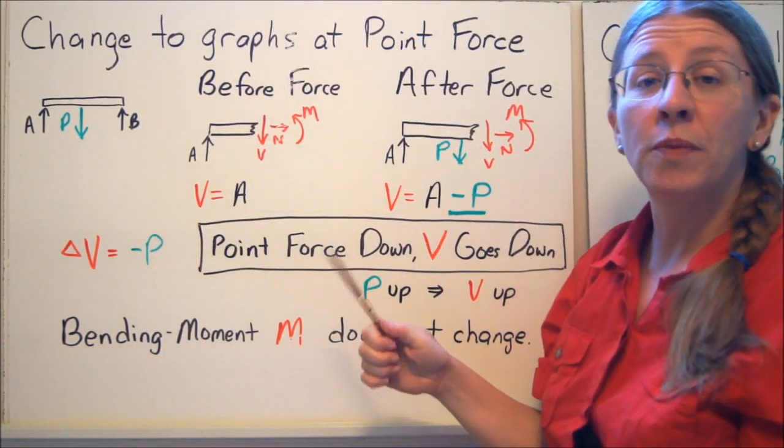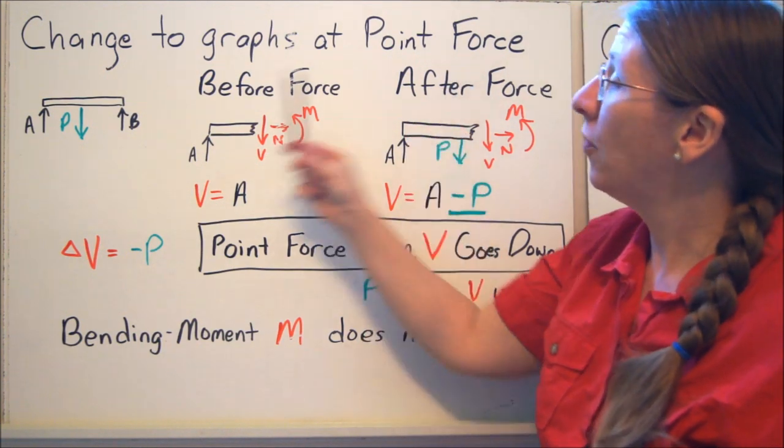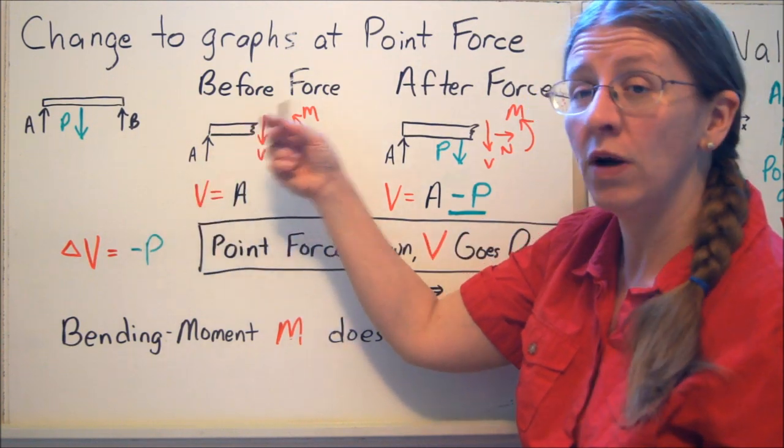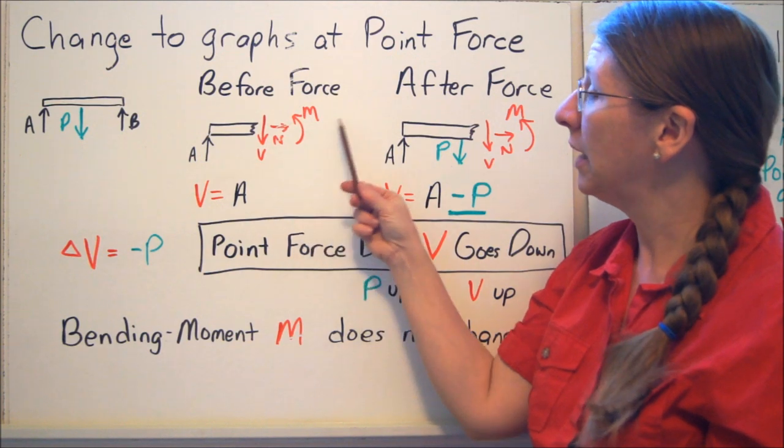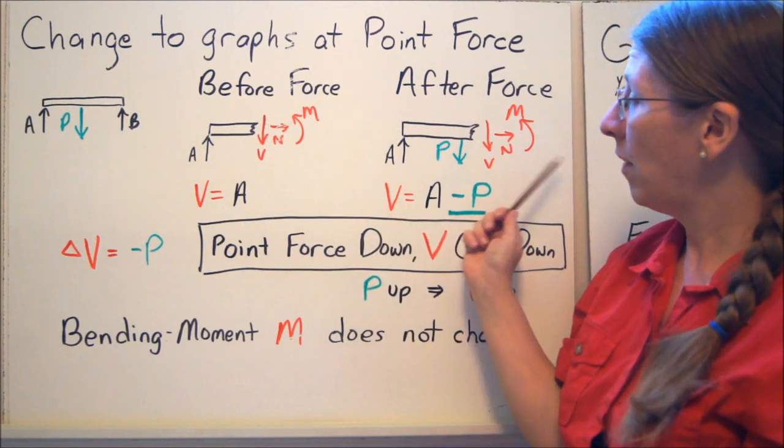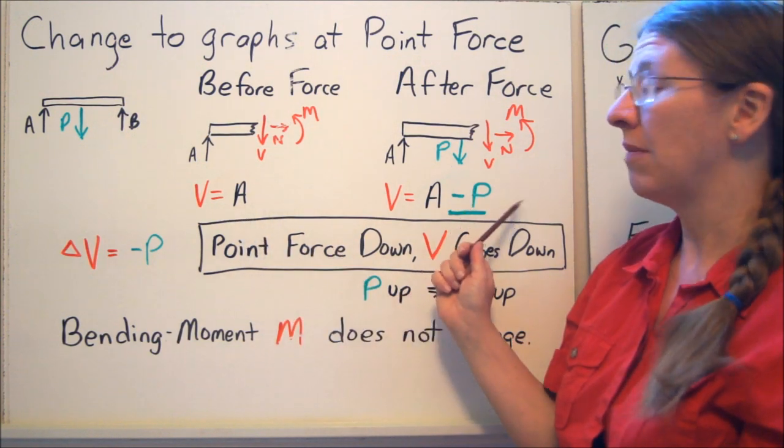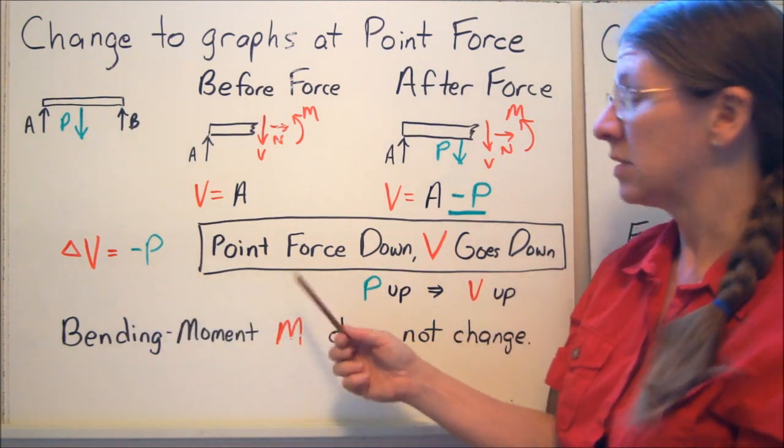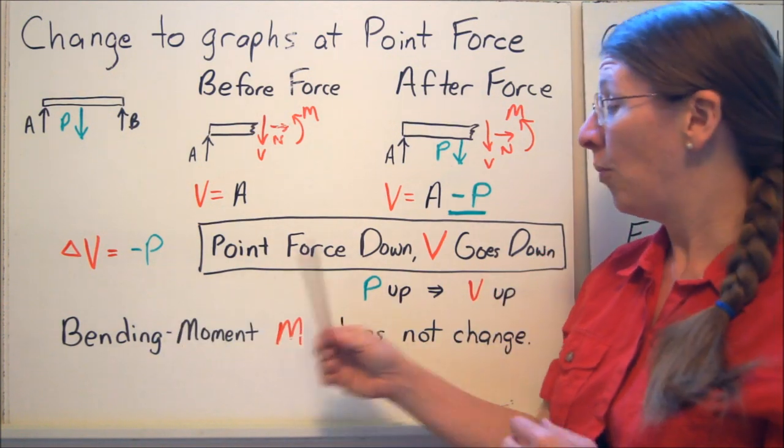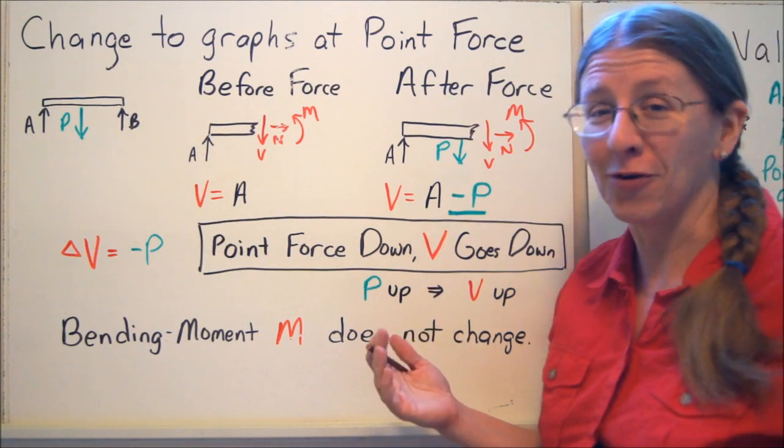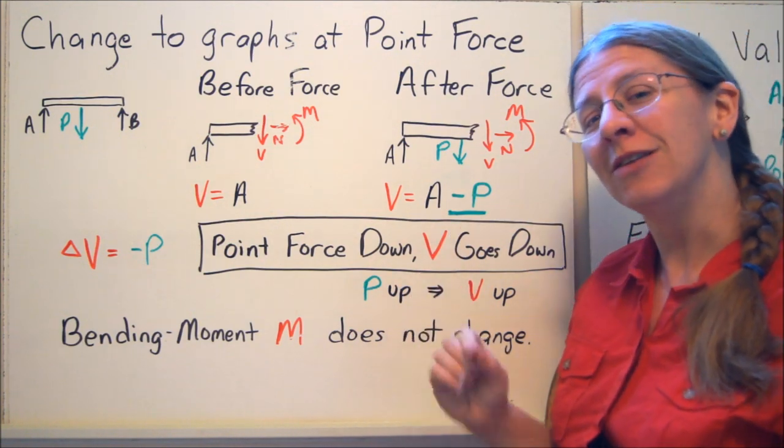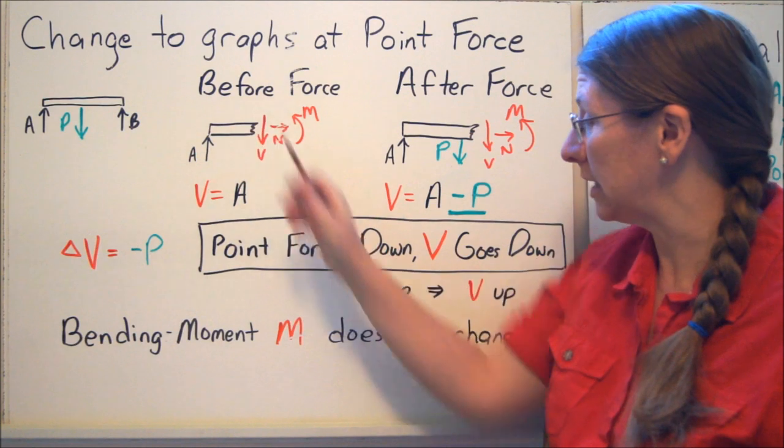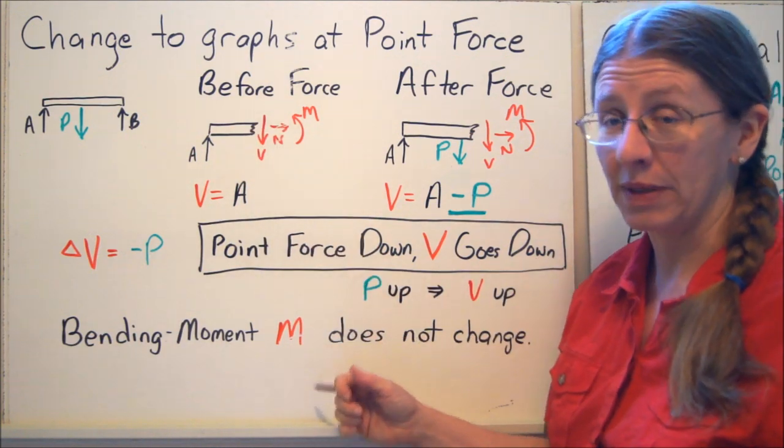What happens to our graphs when we get to point forces and point moments? We look at a point force, here's a beam with one load in the middle, just a point force in the middle. I want to take a slice right before it and right after it and see how it changed. Here are my internal loads. Right before and right after, I get V equals A, and V equals A minus P. So what you can conclude is the change in V is going to be negative P, specifically. Here's your rule. Point force down, V goes down. Point force up, V goes up. Once I have this, I can look at my graph and say, my V diagram from wherever it is right now will drop by P precipitously, right there. Note that your bending moment isn't going to change.